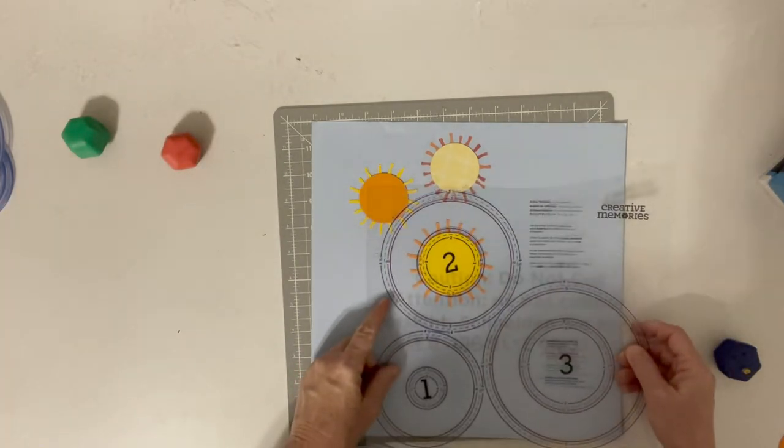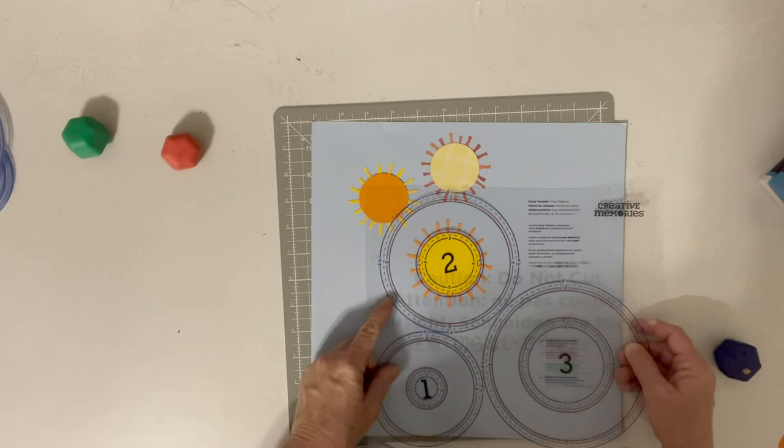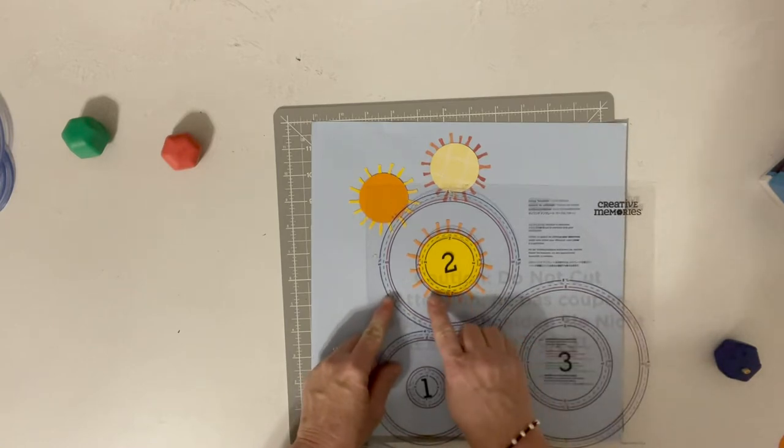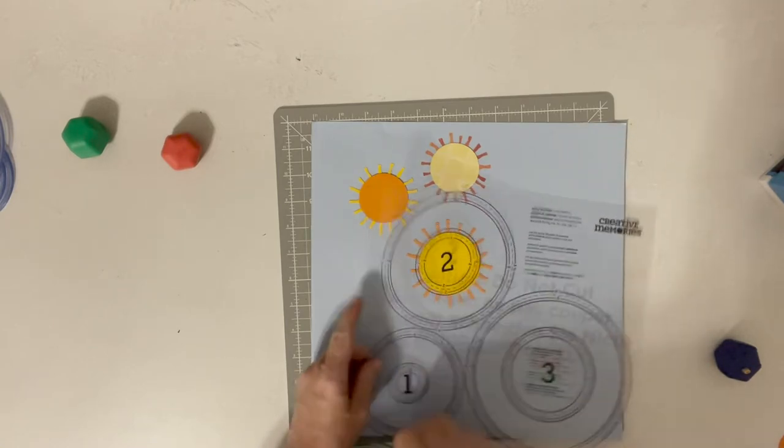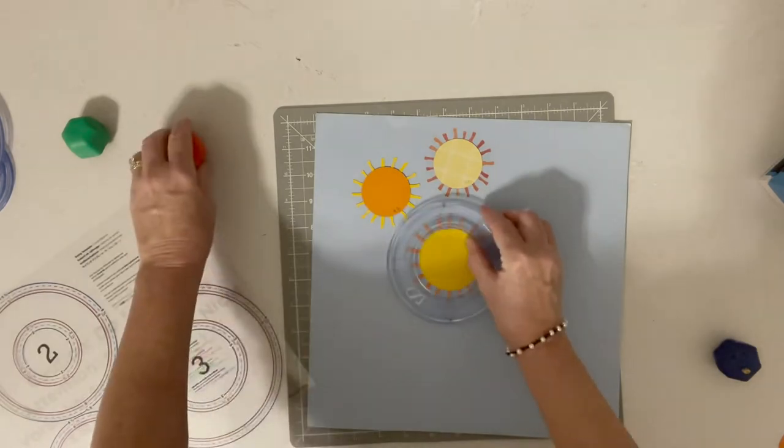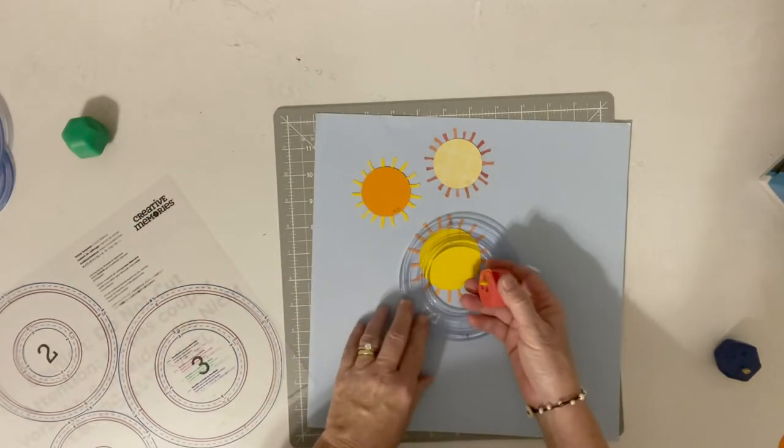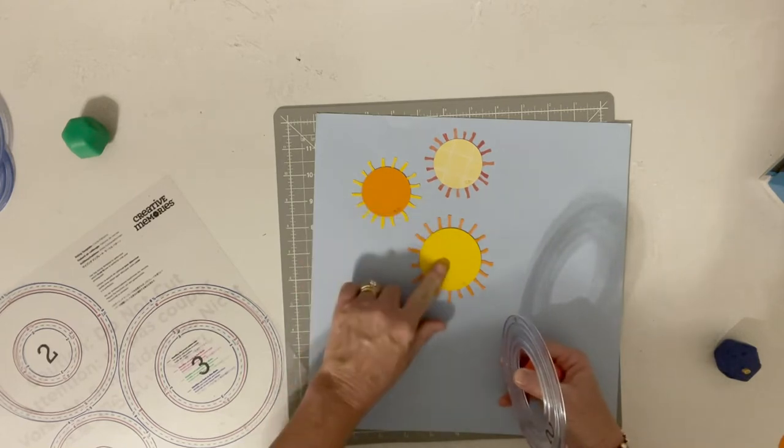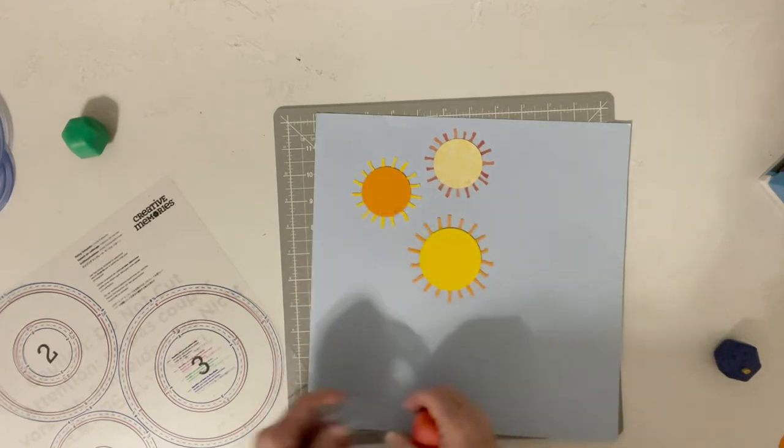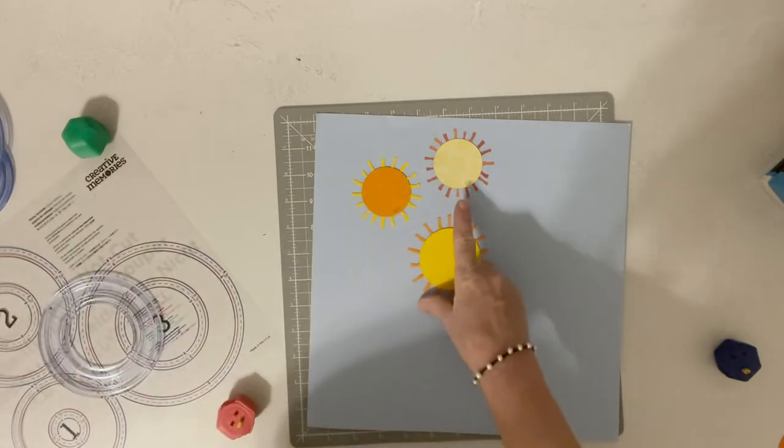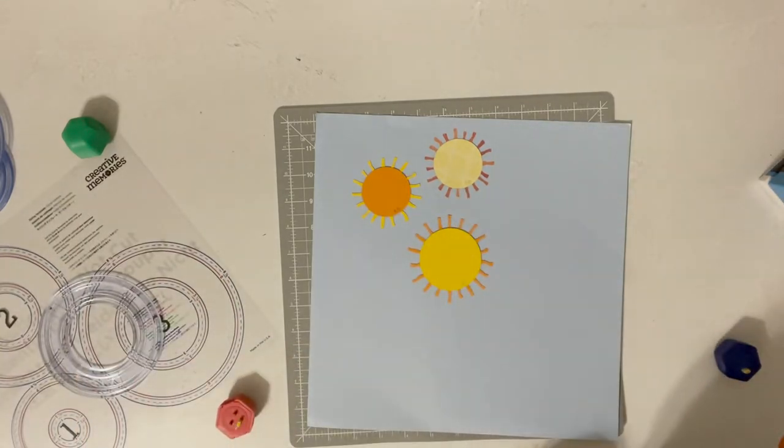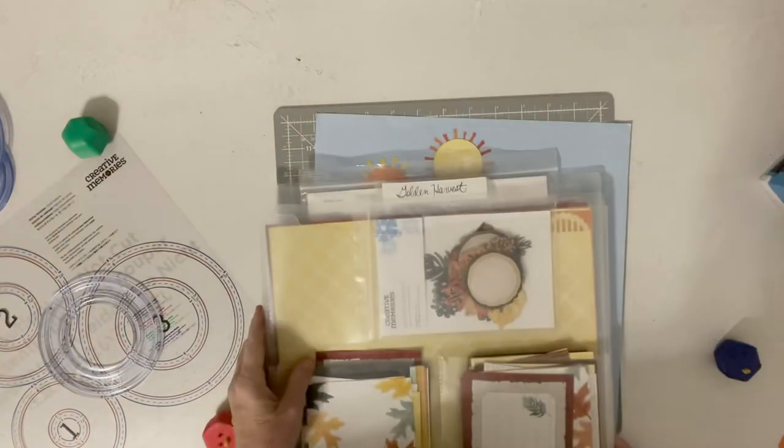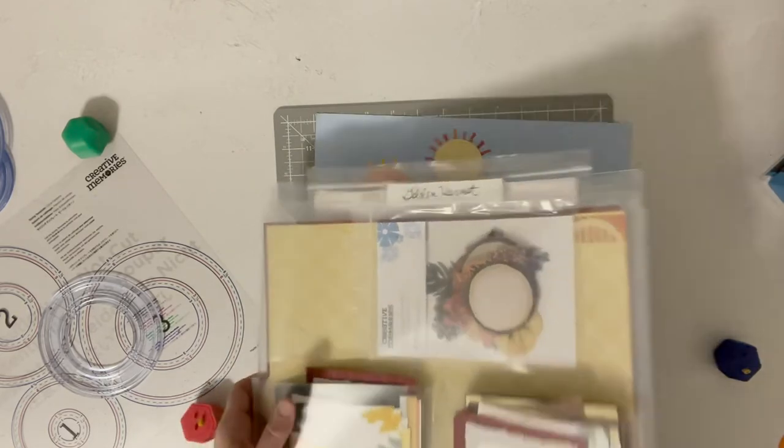So on this one, I would do the exact same thing, except I would use the red blade because this circle matches up with the red blade. So I would use this with the red blade on this yellow gold paper. And these are all just cardstock right here. These papers are from the Golden Harvest collection. And this is the Golden Harvest collection, my stash of it.